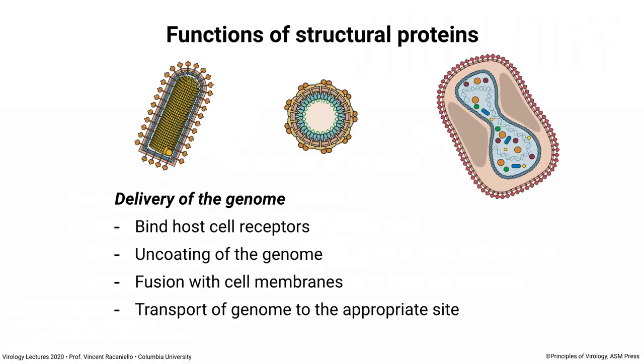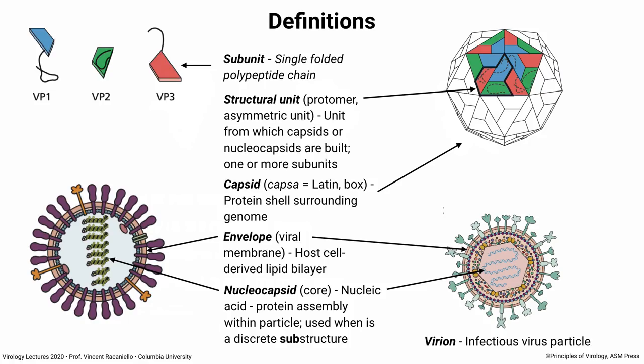Before we start, let's do some definitions so you understand what I'm saying. The first is 'subunit.' When I say a subunit of a virus particle, I mean a single folded polypeptide chain. There are some examples of viral proteins — VPs — which are often abbreviations for capsid proteins, virus particle proteins. Each is an individual polypeptide folded up. That's a subunit.